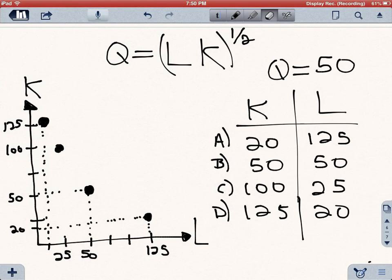Okay, so here what I'm doing is I am connecting all these points, or putting all these coordinates, K and L, in an X and Y plane that has L in the horizontal axis and K in the vertical axis. So here's our first point, point A, 20 capital and 125 labor. So this is A.